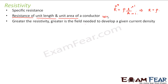Greater the resistivity, greater is the field needed to develop a given current density. If the resistivity of a particular substance is very high, you need more electric field to drive the same current. Suppose you have two objects — object A and object B. The resistivity of object A is very high, and the resistivity of B is comparatively low. Now if you apply an electric field to these objects...